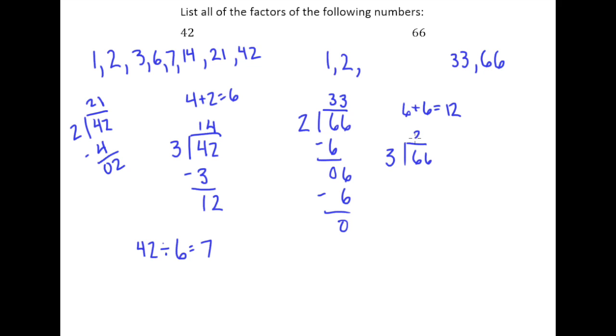So we'll go ahead and divide 66 by 3. 3 goes into 6 twice. Drop down the 6, goes in twice. And so 22 is the number that goes with 3.